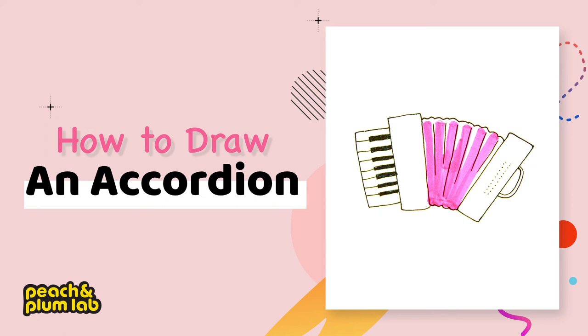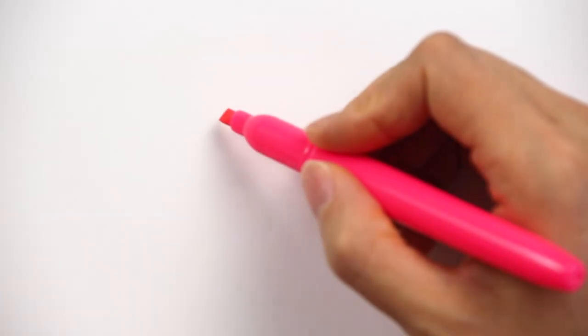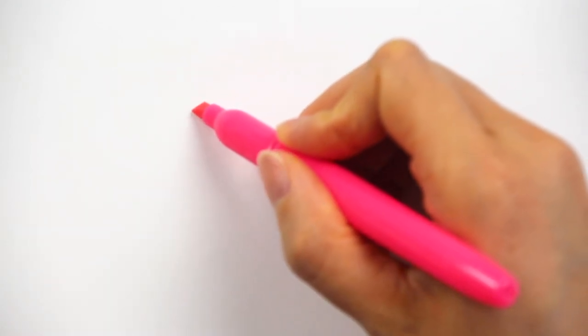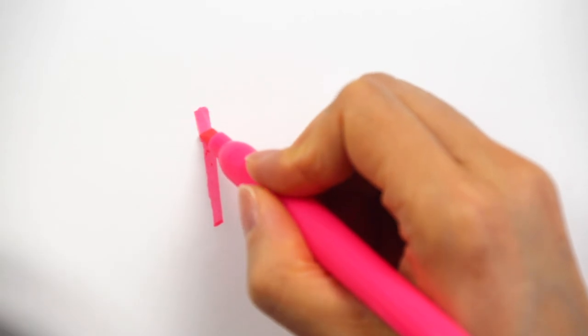Let's see how we can draw this. First of all, I want to use color to draw the middle part, the bellow. To start, as you can see, I'm not drawing a very straight vertical line.